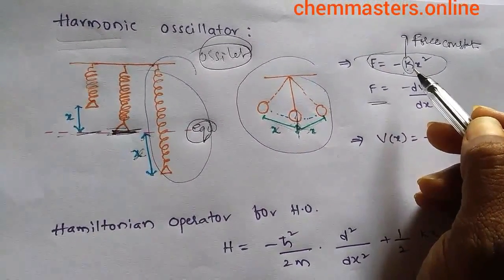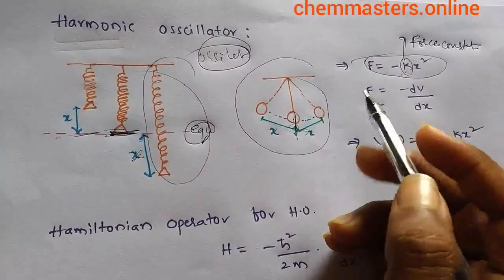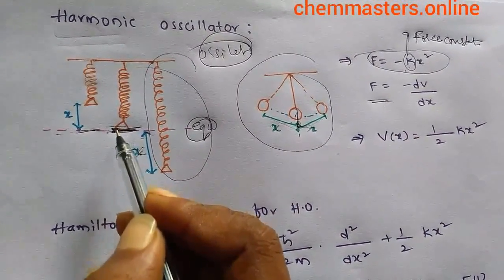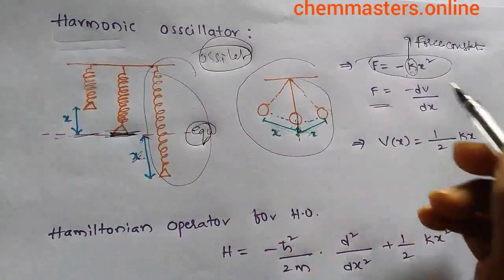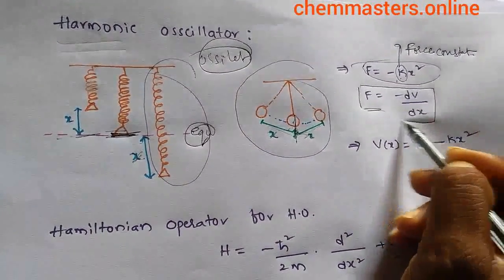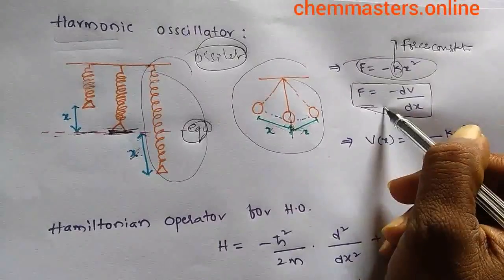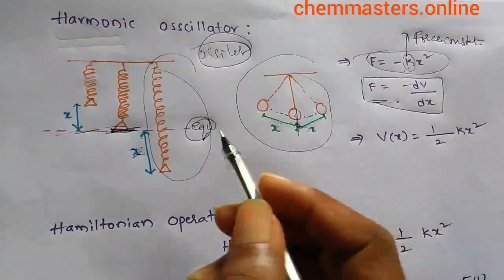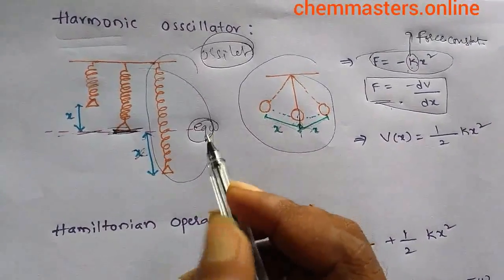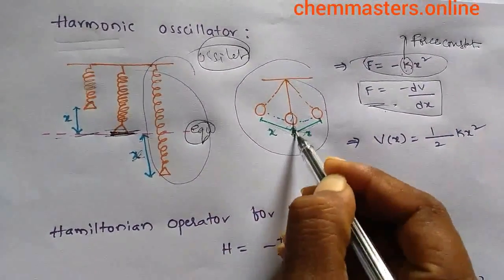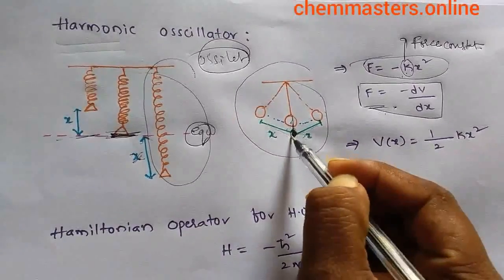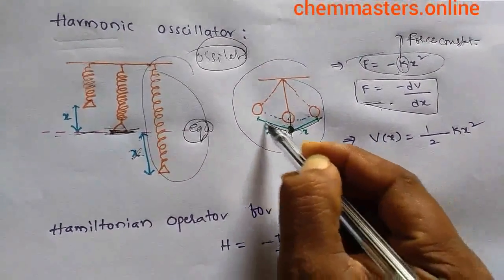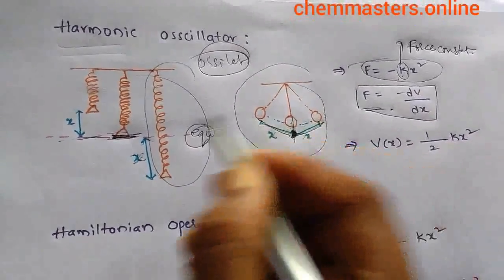Because the force acting on a particle is the negative gradient of potential energy, we have F = −dV/dx. It follows that the potential energy of the oscillator varies with displacement x from the equilibrium position.